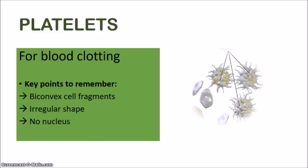Let's move on to the final component: the platelets. Platelets are important for blood clotting. When we get a cut and start to bleed, we don't want to bleed indefinitely — so we need blood clotting to occur, and platelets are crucial components in that process. They are essentially fragments of cells — biconvex fragments with an irregular shape, like cell pieces. They have no nucleus because they are just cell fragments. When these platelets are activated, they begin the whole process of blood clotting to help stop blood from escaping the body.